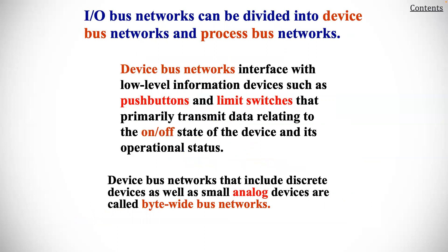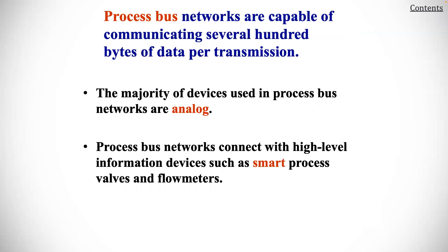Field bus networks can be divided into device bus networks and process bus networks. A device bus network interfaces with lower-level information devices such as push buttons and limit switches that primarily transmit data relating to the on-off status of the device and its operating status. Device bus networks that include discrete devices as well as small analog devices are called byte-wide bus networks.